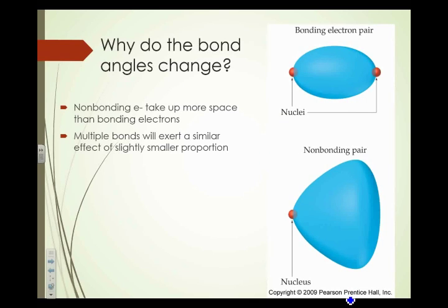Remember we talked about the bonding electron pair as being distributed between two nuclei? Here's one nucleus, here's another nucleus, here are my happy bonding electrons. See how they're distributed between those two nuclei? On the other hand, if I just have one nucleus and I have a nonbonding pair of electrons, it takes up way more space.